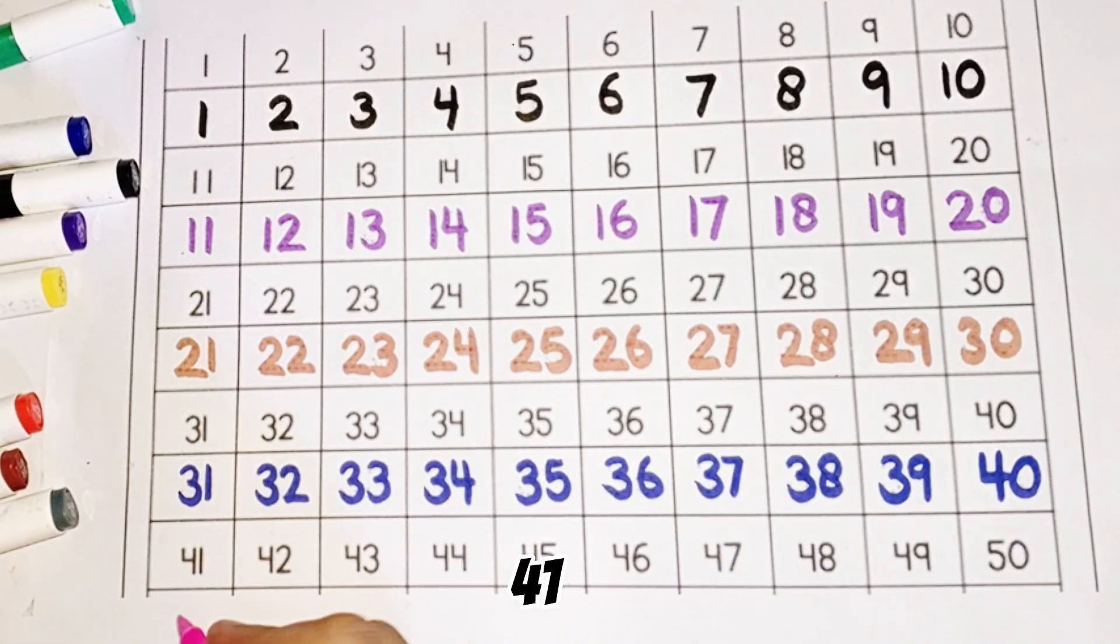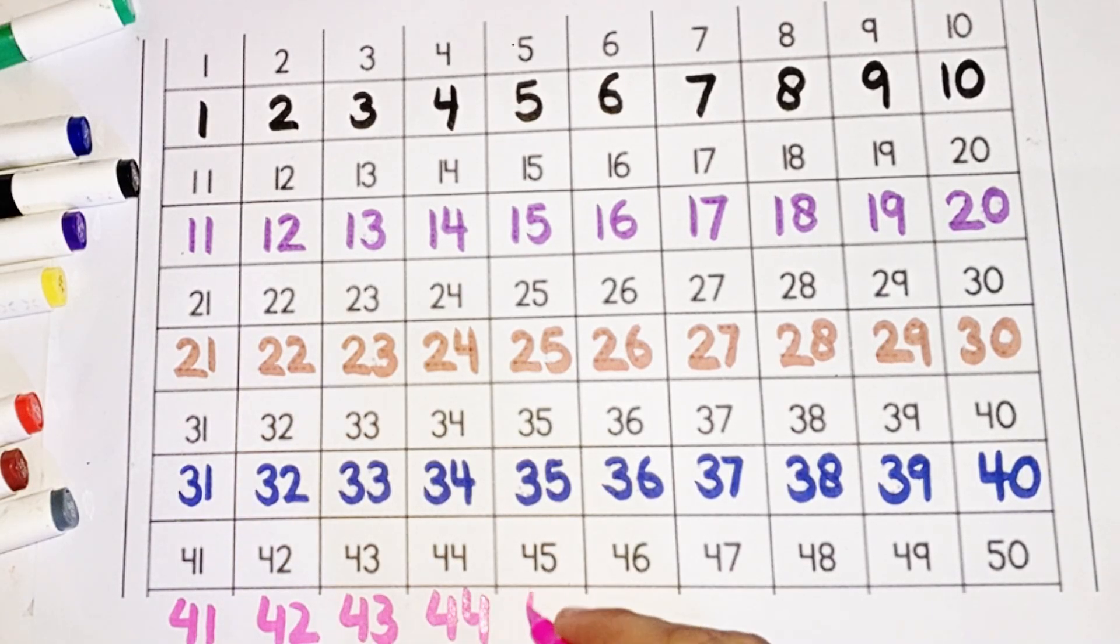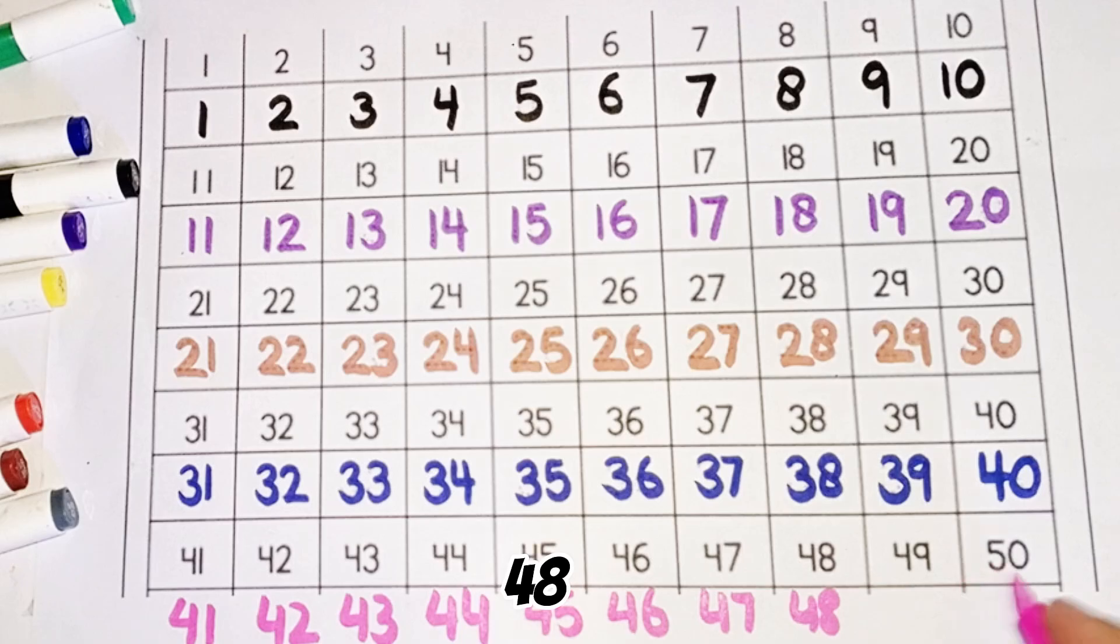Forty-one, forty-two, forty-three, forty-four, forty-five, forty-six, forty-seven, forty-eight, forty-nine, fifty.